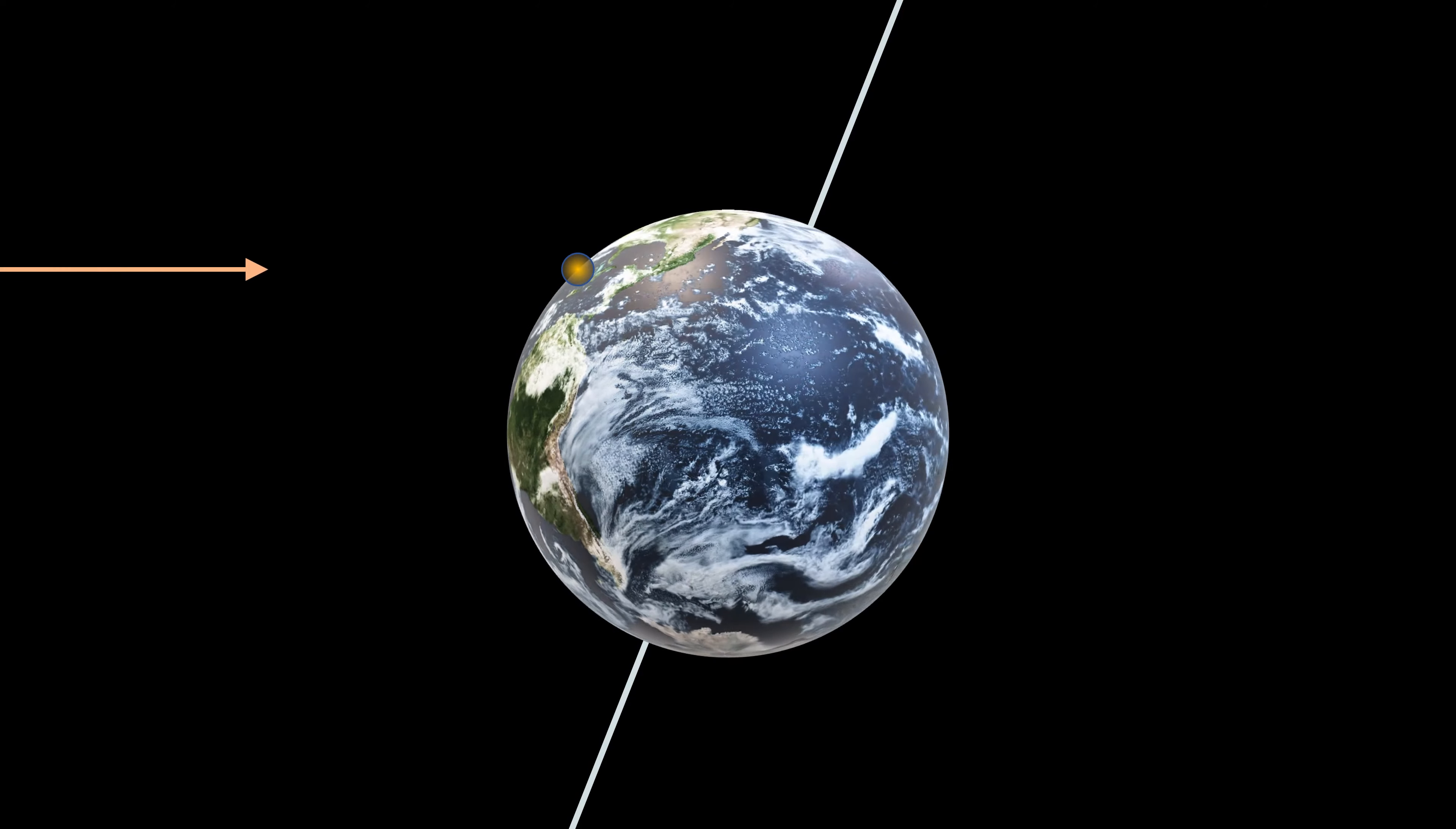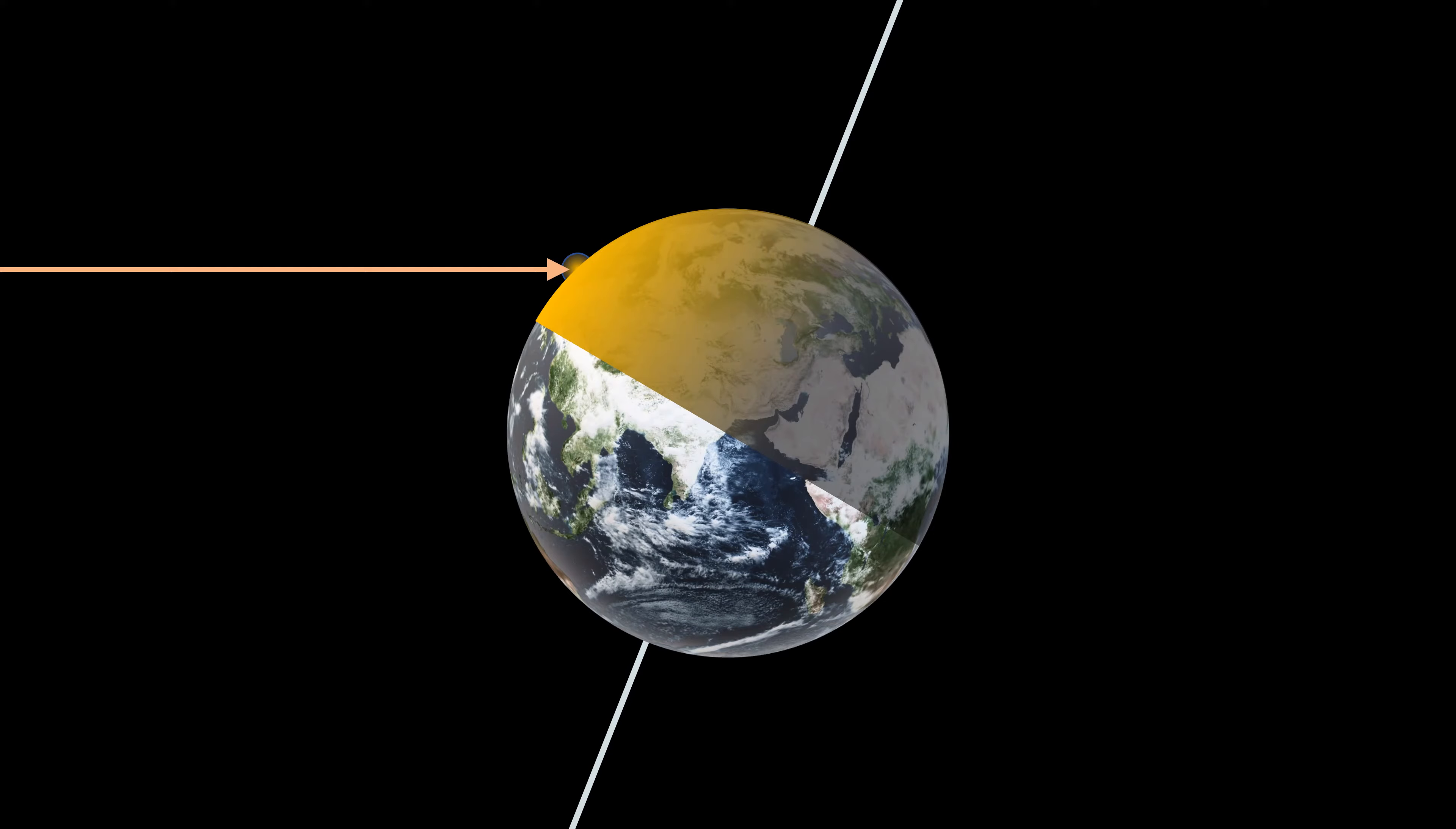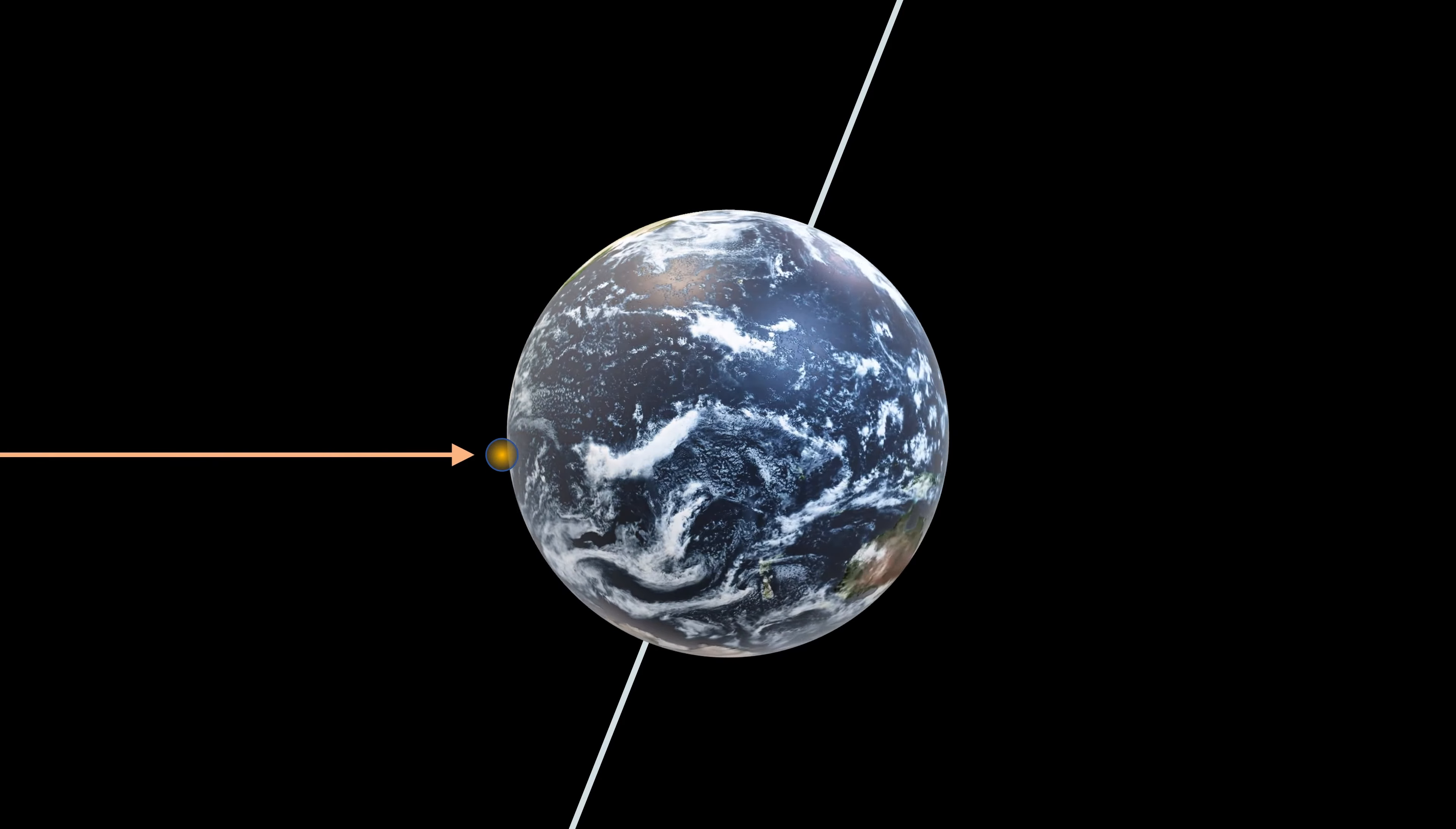In the northern hemisphere, the sun rays hit the surface at a shallow angle and for a shorter period of time. In the southern hemisphere, the sun rays hit the surface at a steep angle and for longer periods of time.